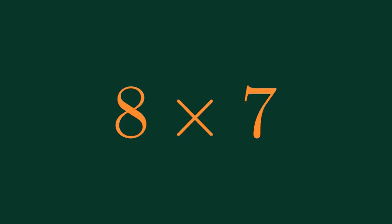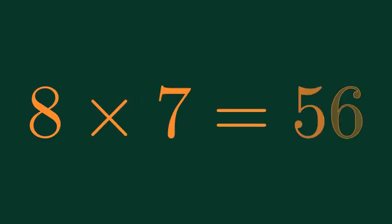What is 8 times 7? 8 times 7 is equal to 56.